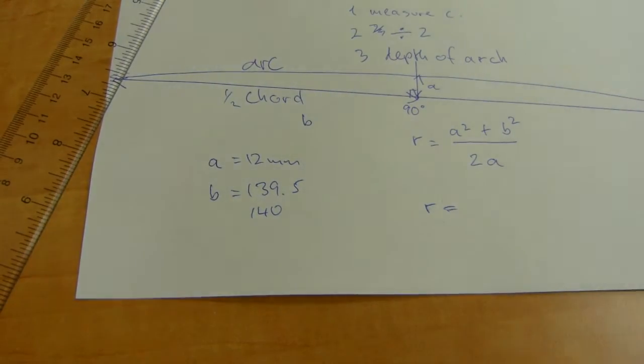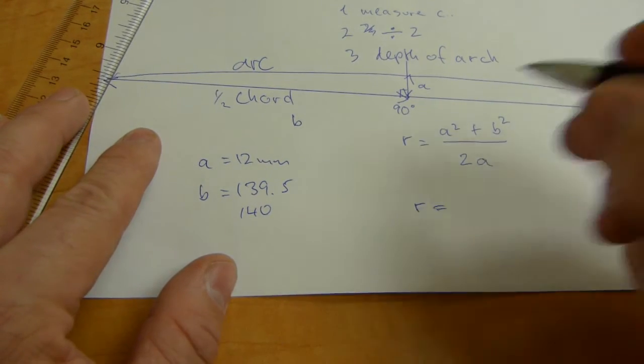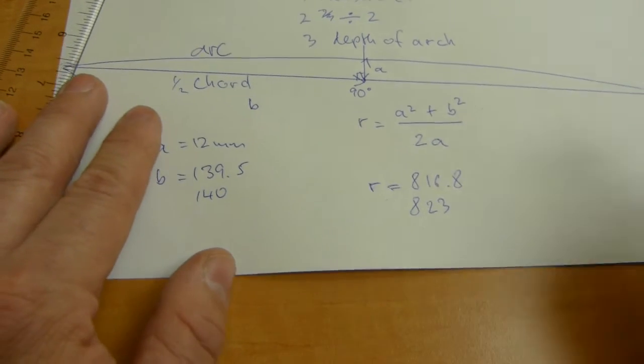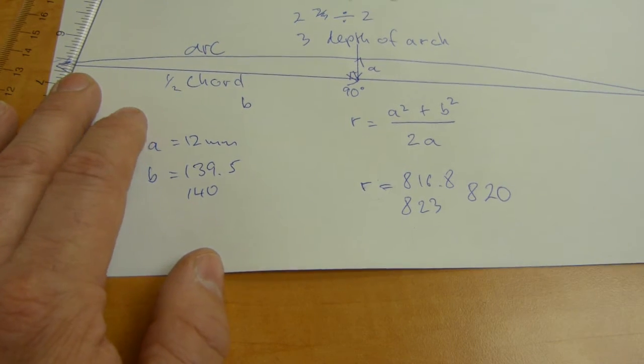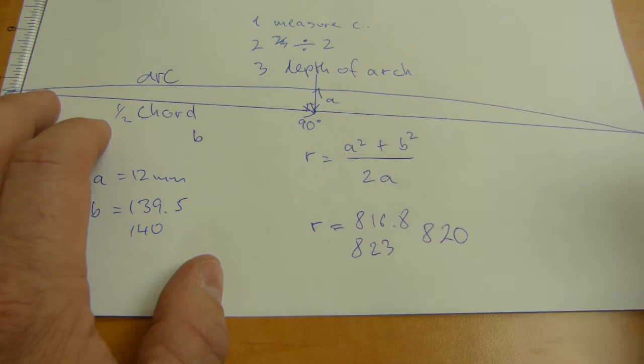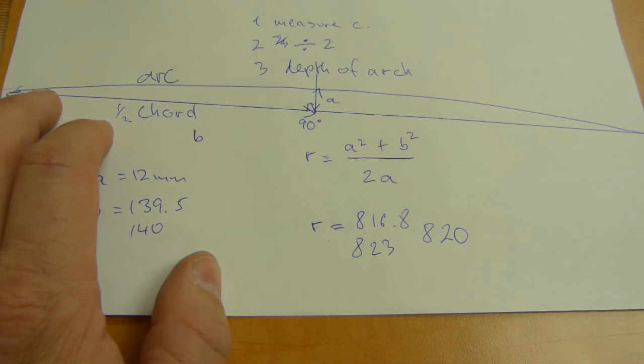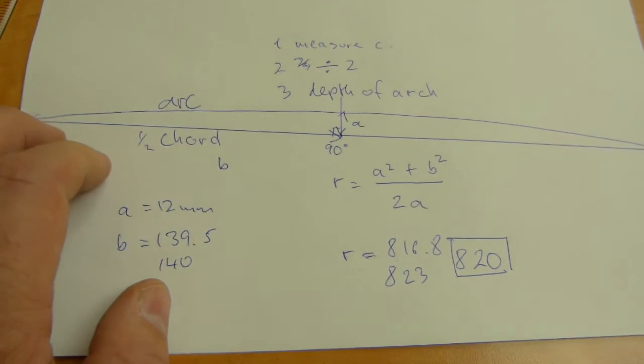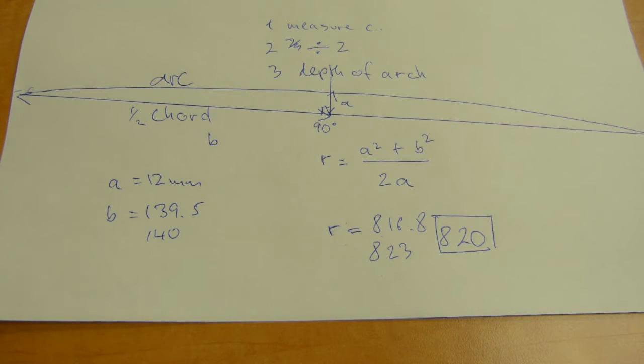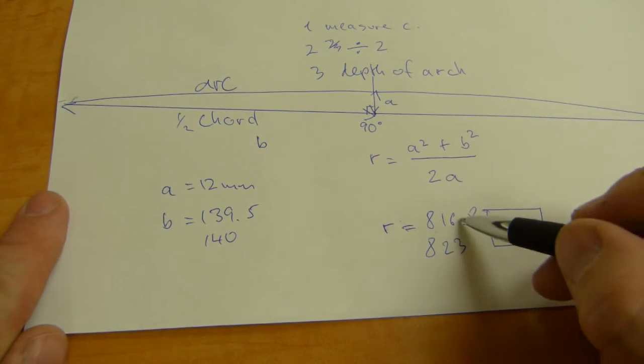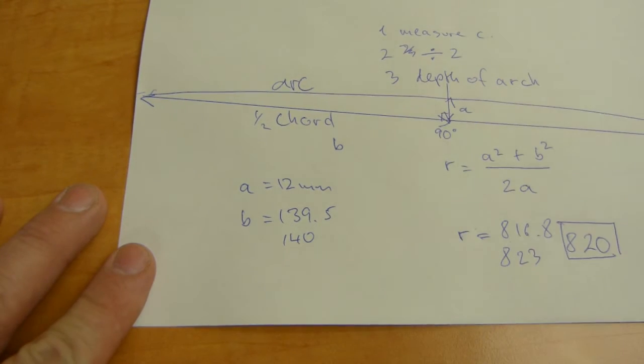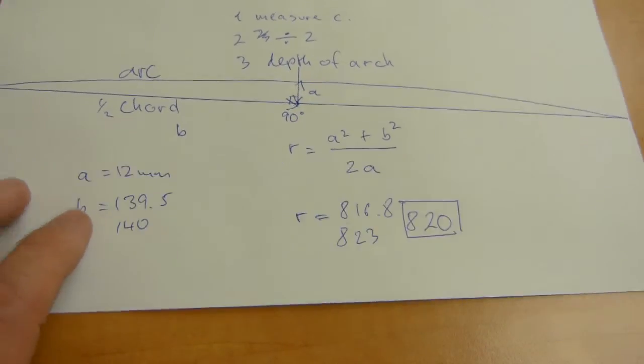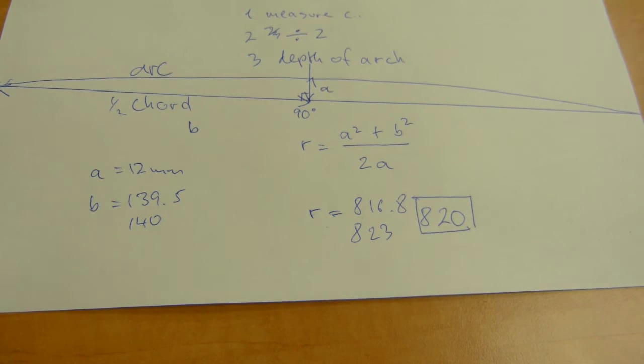You're gonna get two results. One of the numbers will be 816.8, the other number will be 823. I'm sure the correct radius is 820, because no engineer or industrial designer designs anything with a radius of 816.8. The number that the designer had in mind was 820, not a round number but close enough to round. This uncertainty comes from the uncertainty in the measurement of length and depth of arc. If it's just off a few tenths of a millimeter, it's affecting the final outcome. But 820 is a safe number there for radius.